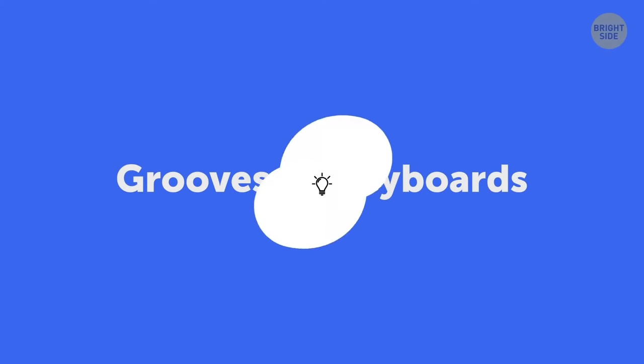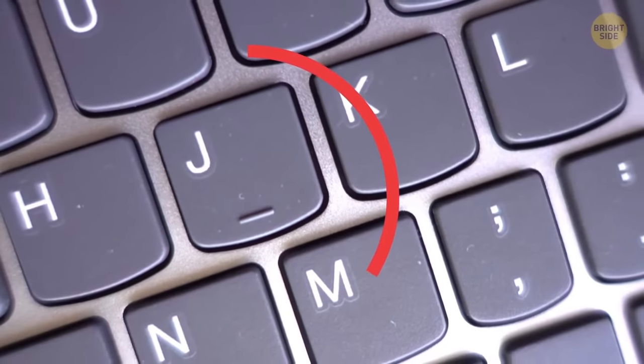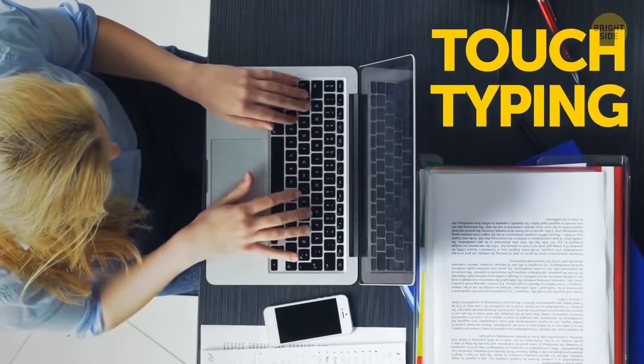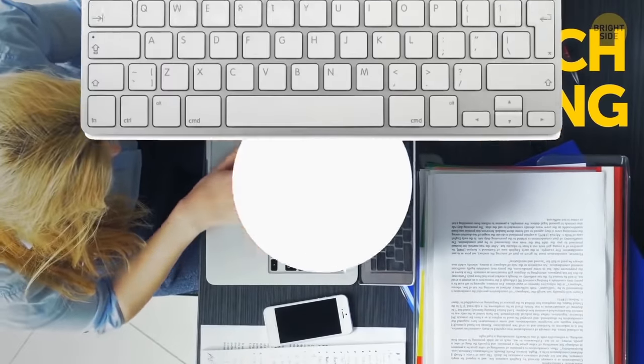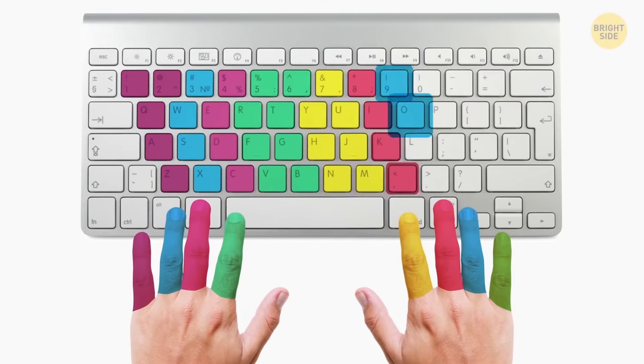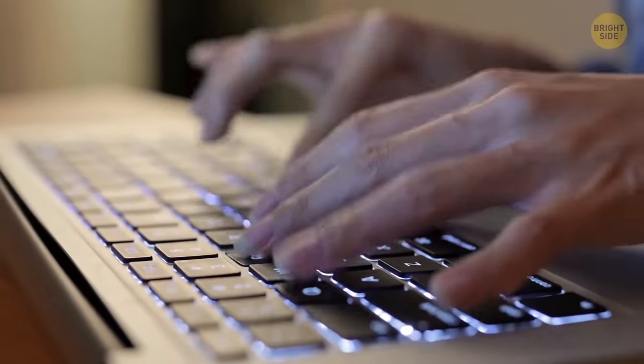Palpable lines on the F and J keys help those who type without looking at the keyboard to position their hands correctly. You place your right and left index fingers on the grooves and immediately understand where your other fingers should go. None of which should be up your nose.